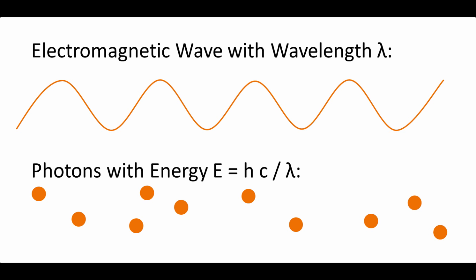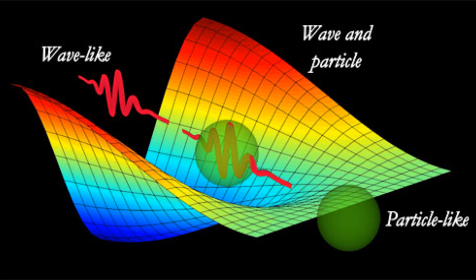Light can also be modeled as a stream of particles called photons. All photons are massless and travel at the speed of light, but each photon has its own energy. The relation between the wave and particle picture of light is that an electromagnetic wave with wavelength lambda is equivalent to a photon with energy E equals hc over lambda, where h is Planck's constant and c is the speed of light. The fact that light can be modeled as a wave or as a particle might seem paradoxical.